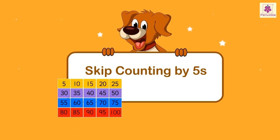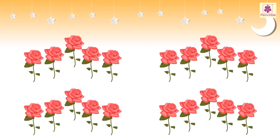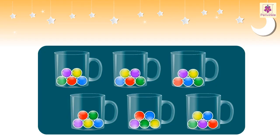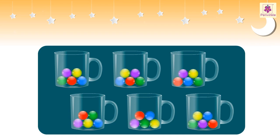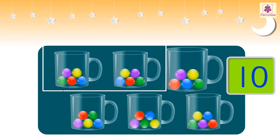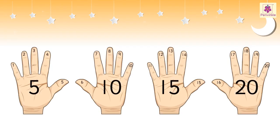Skip counting by fives. We use the concept of skip counting for quickly counting objects by putting them in collections. Here you have been given some cups each having five beads. How many beads are there altogether? We get 5, 10, 15, 20, 25, and 30 beads at the end, which is the answer.